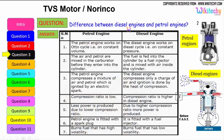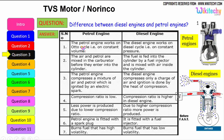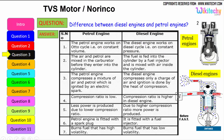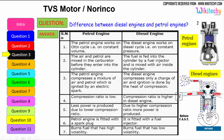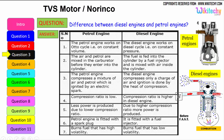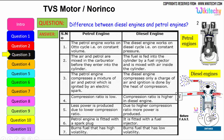Let us see the difference between the diesel engine and the petrol engine. The petrol engine works on the Otto cycle, therefore on constant volume, whereas the diesel engine works on the diesel cycle at constant pressure. In a petrol engine, air and petrol are mixed in the carburetor before entering the cylinder, while in a diesel engine, fuel is fed into the cylinder by a fuel injector and mixed with air inside the cylinder.